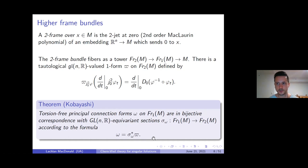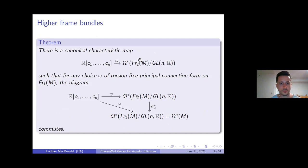With this we can reformulate the classical Chern-Weil homomorphism, and in fact you can do this for general principal bundles, but I'll focus on frame bundles. Using the tautological one-form on two-frames we get a canonical characteristic map. This one-form has all the properties expected of a connection form — we can take its curvature and define a tautological Chern-Weil homomorphism. This characteristic map makes a certain diagram commute whenever you choose a principal connection form omega.